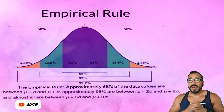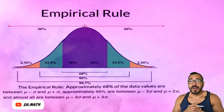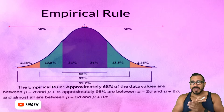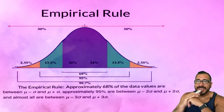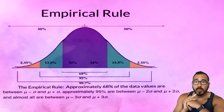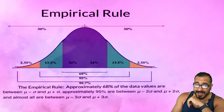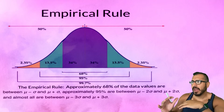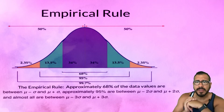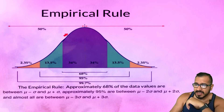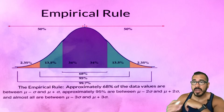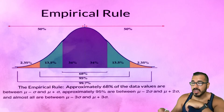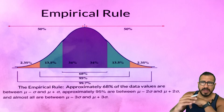All right, mathletes, let's go ahead and talk about the empirical rule — one of my favorite topics. So what is the empirical rule about? Let's say you gather all your data and you look at its histogram or any other type of graph, and what you notice is that its shape is bell-shaped — it's symmetric, a nice bell-shaped curve, or somewhat bell-shaped.